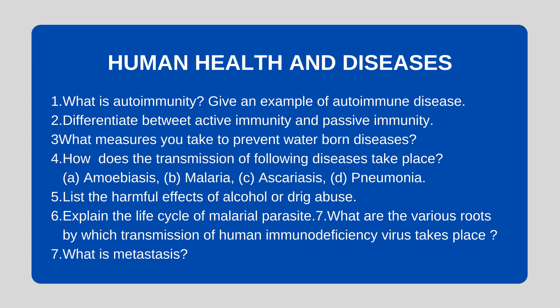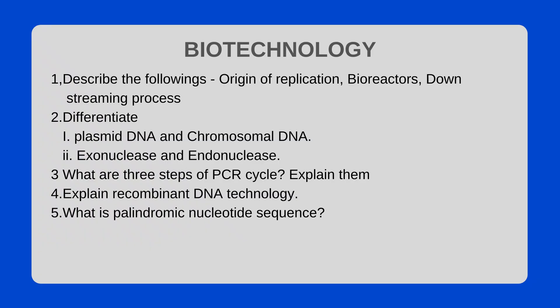Human Health and Disease: What is autoimmunity? Give an example of an autoimmune disease. Differentiate between active immunity and passive immunity. What measures can you take to prevent diseases? How does transmission of the following diseases take place: amoebiasis, malaria, ascariasis, and pneumonia? Explain the life cycle of the malarial parasite. What are the various routes by which transmission of HIV takes place? What is metastasis?